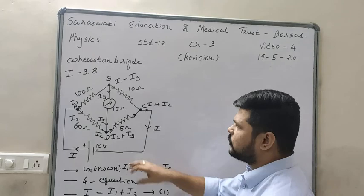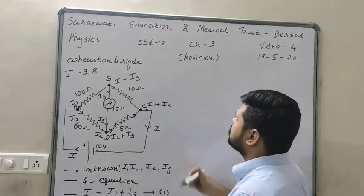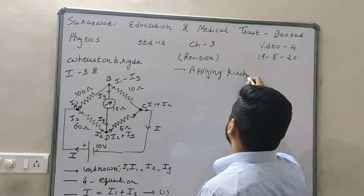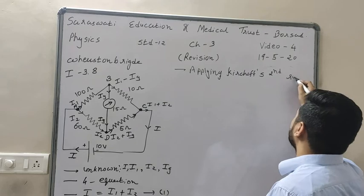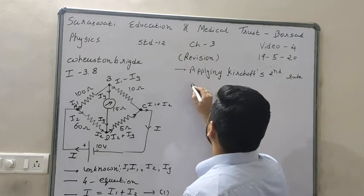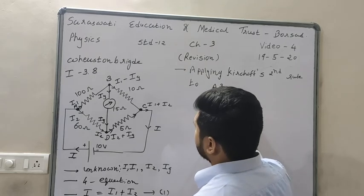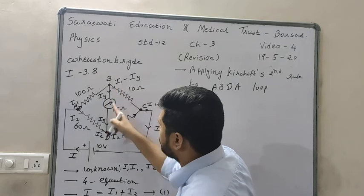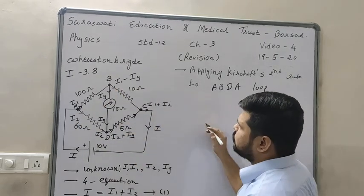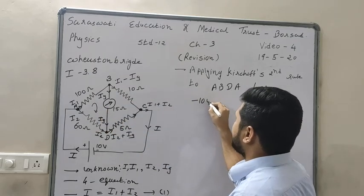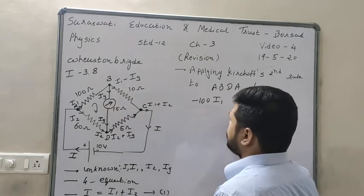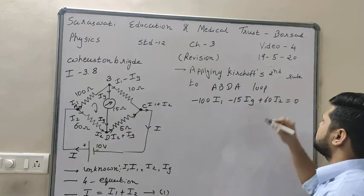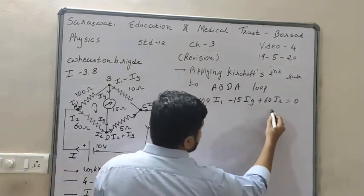Applying Kirchhoff's second rule to loop A-B-D-A: going in this direction, the equation is: minus 100 I1, minus 15 IG, plus 60 I2 equals 0. This is equation number 2.